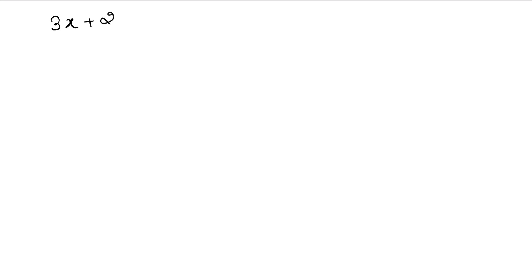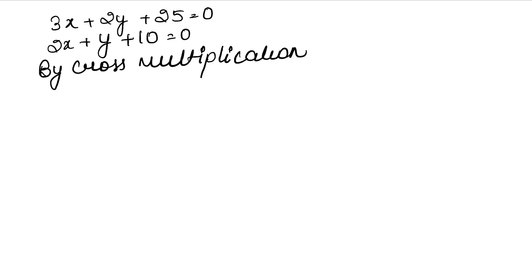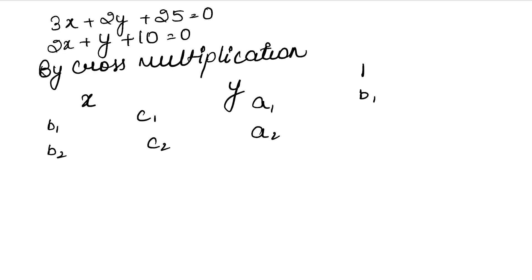The first equation is 3x + 2y + 25 = 0 and the second equation is 2x + y + 10 = 0. Now we solve using cross multiplication. The formula requires coefficients B1, B2, C1, C2, A1, A2 and B1, B2.